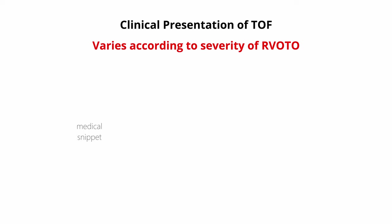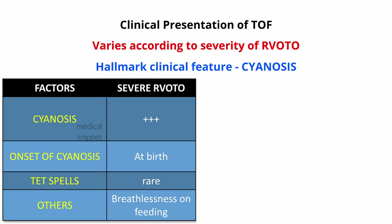Clinical presentation varies according to the severity of RVOT obstruction. The hallmark clinical feature is cyanosis. If the RVOT obstruction is severe, as in TOF with pulmonary atresia, cyanosis is present immediately after birth. These babies don't develop heart failure; they become breathless on feeding, and tet spells are rare.